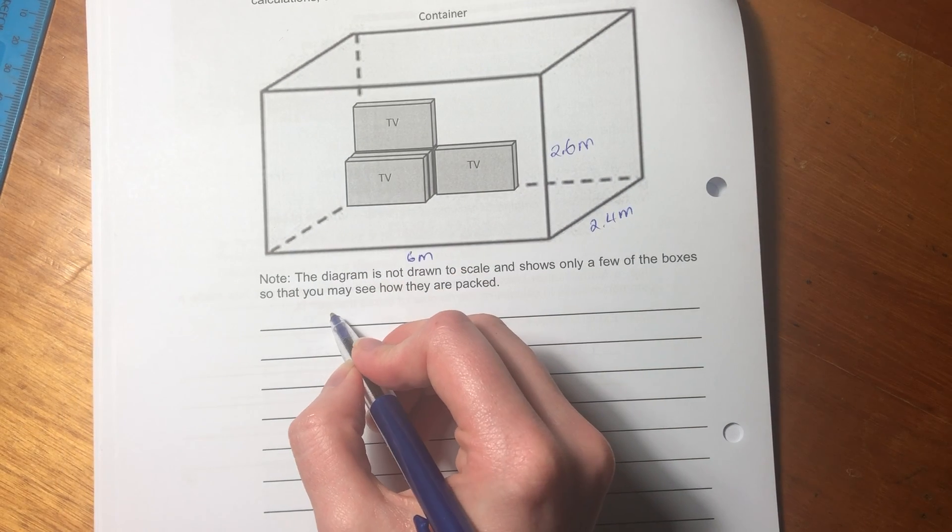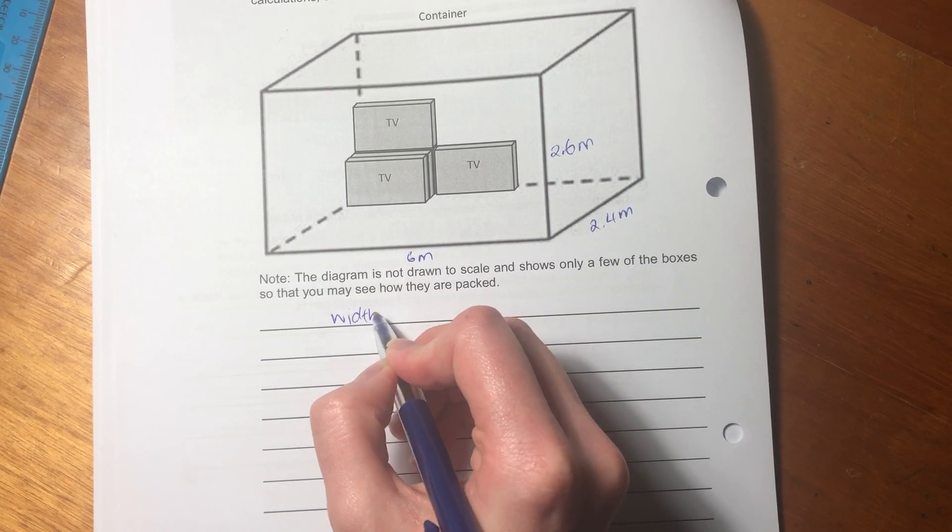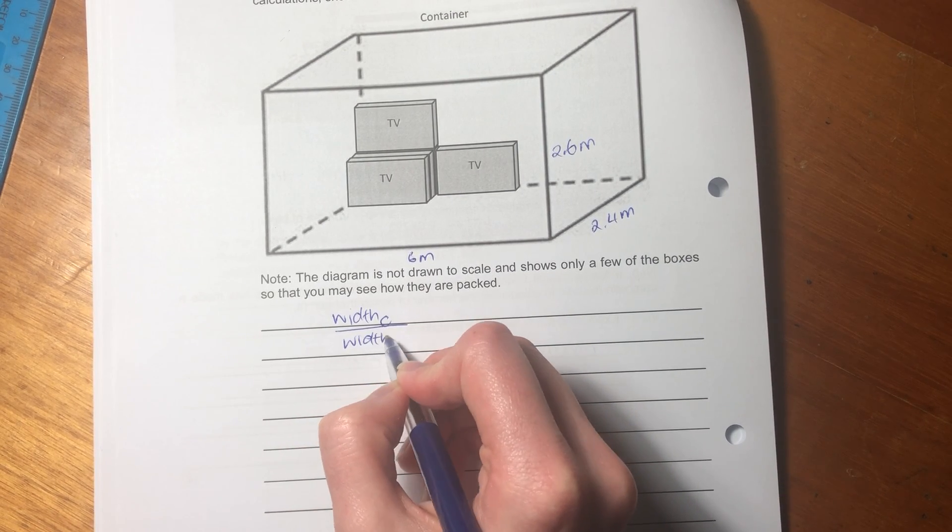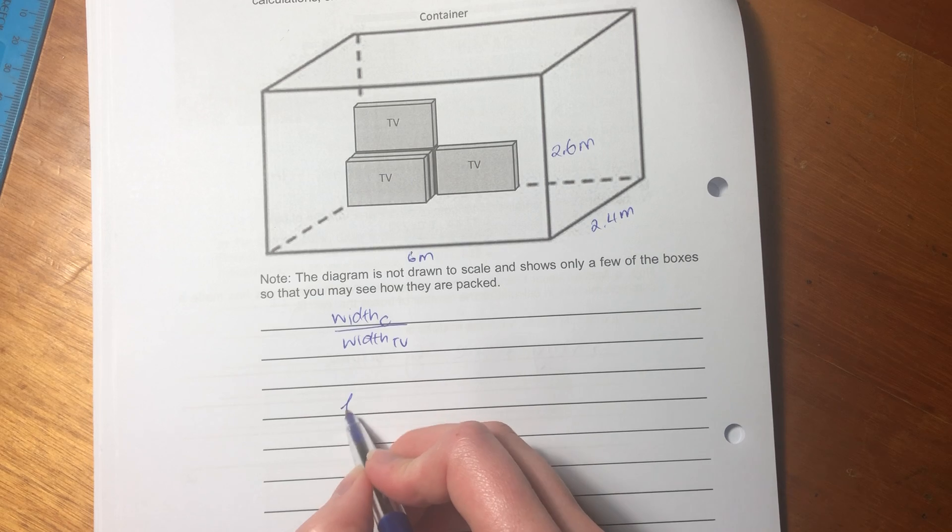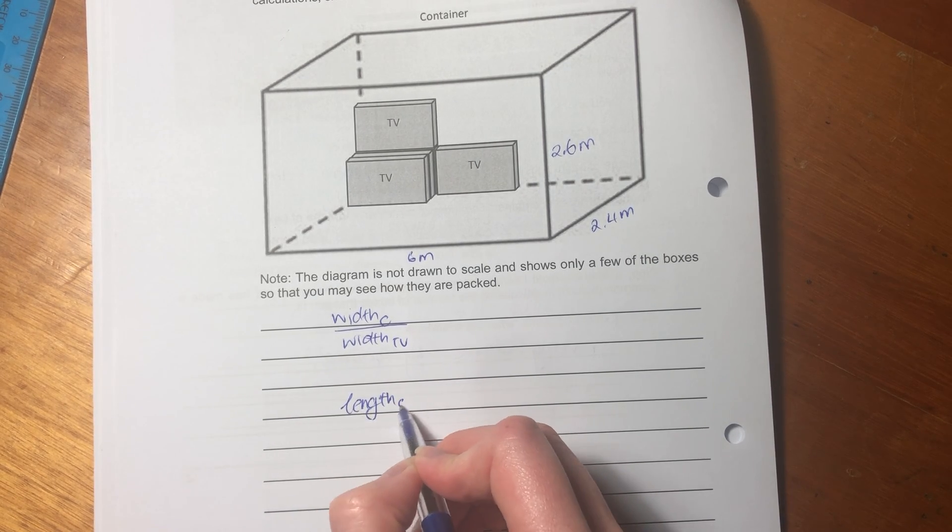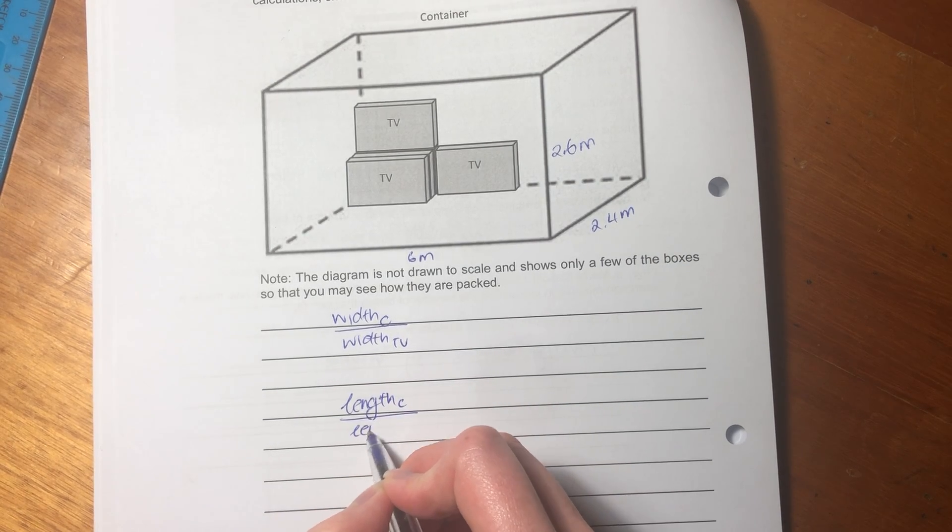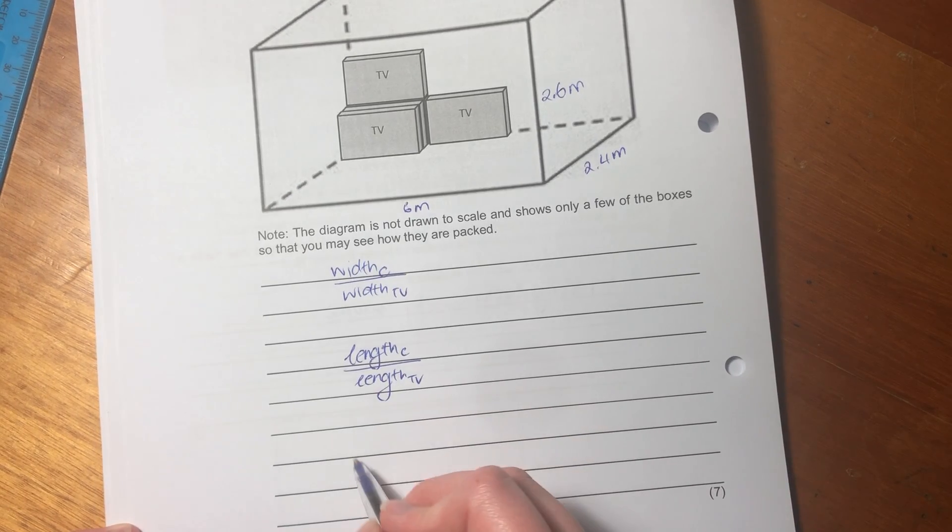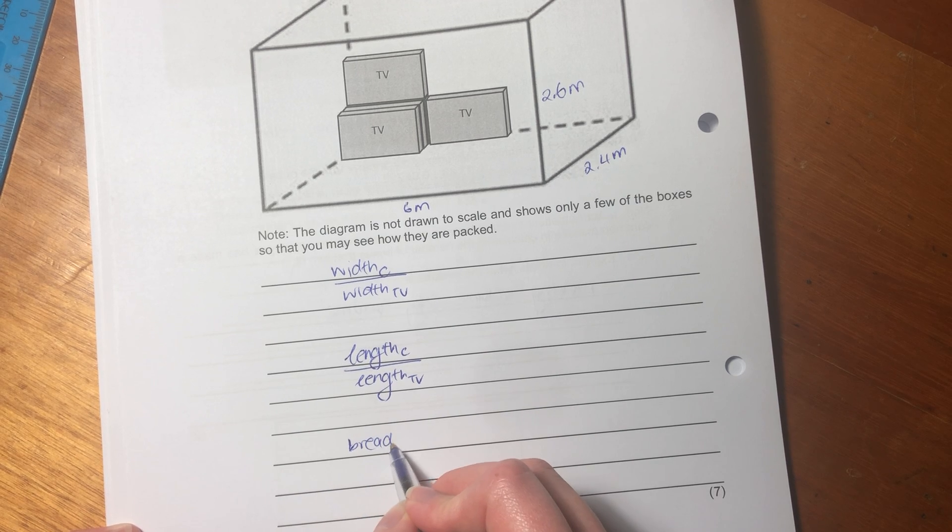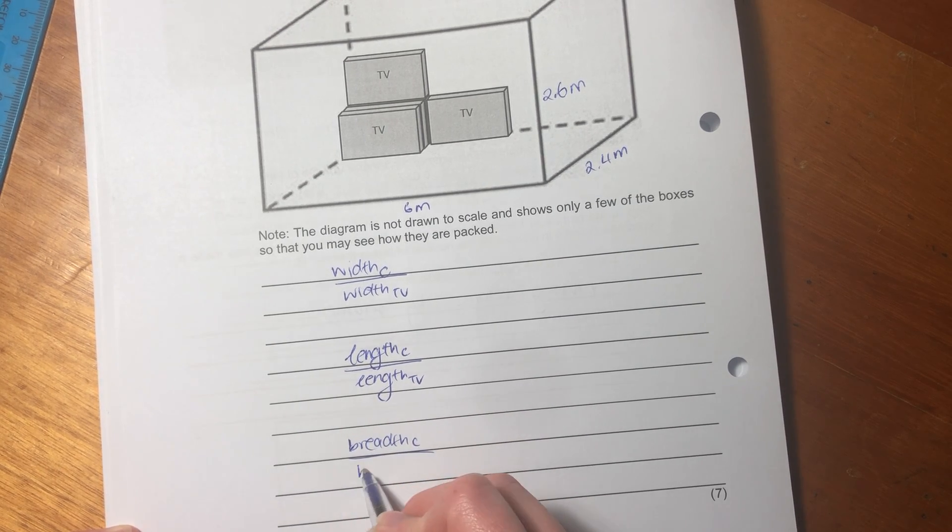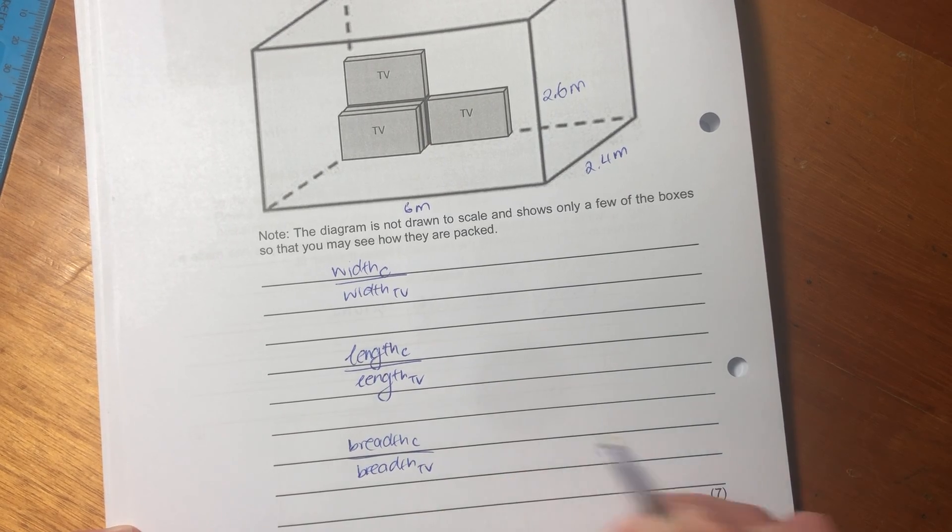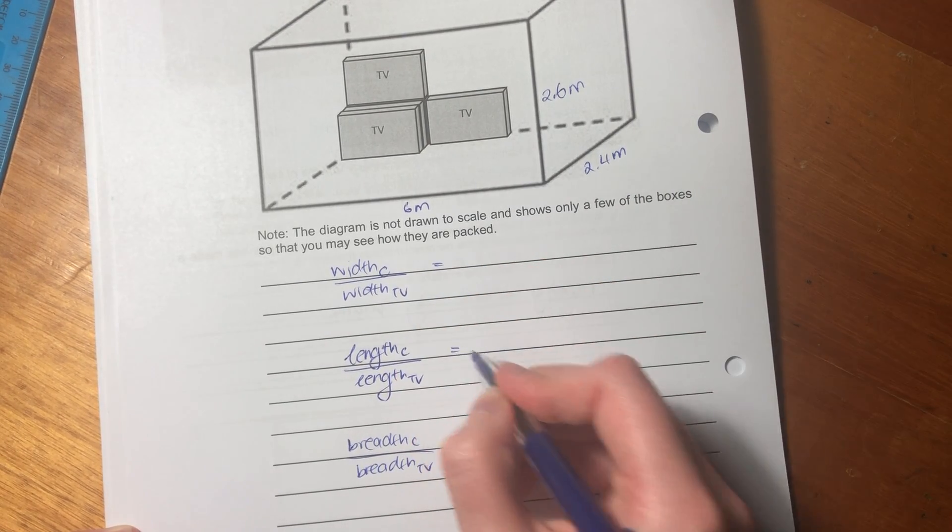So to understand how many TVs can go into it, we should divide each of the dimensions of the bigger container by its corresponding measurements of the TV. So basically, we're going to say width of container over width of TV. Then we're going to say length of container over length. And then breadth of container over breadth.